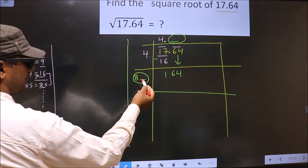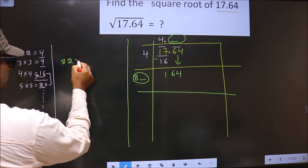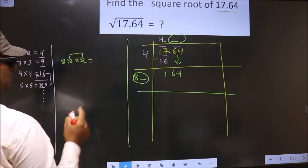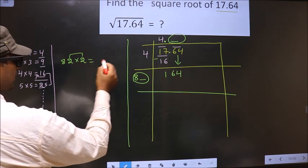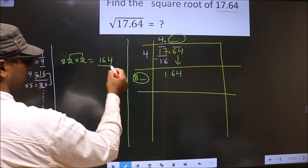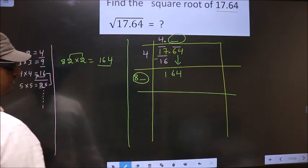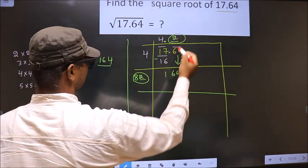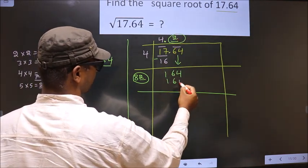If I take 2, I should also multiply by 2. These two numbers should be same. So 2 into 2, 4. 2 into 8, 16. We got exact 164. So here you take 2. Here also 2. And here 164.